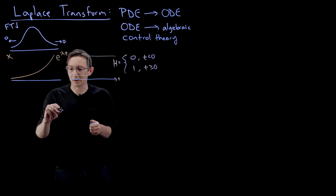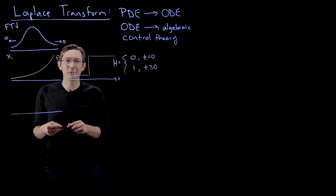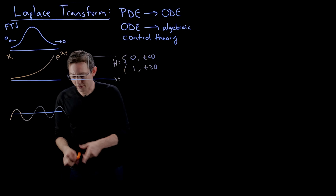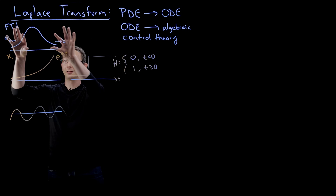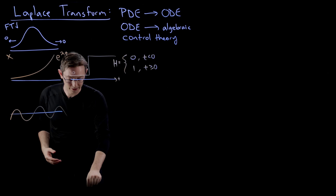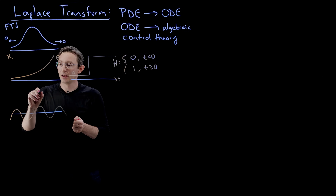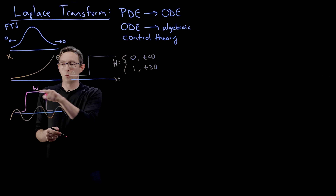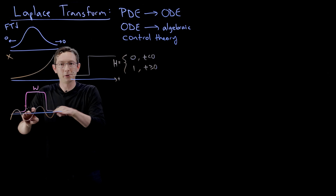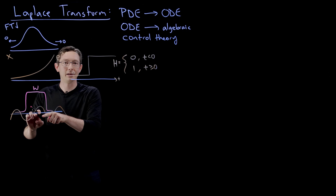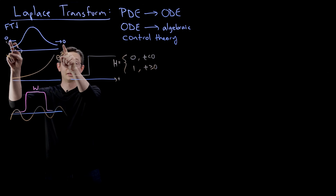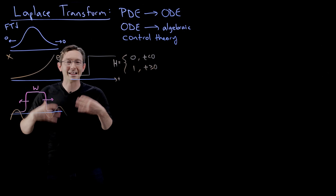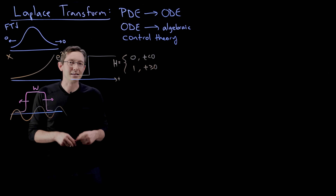There are other examples where technically you can Fourier transform, but it's a bit of a pain — like a trigonometric function, which doesn't decay to zero at plus and minus infinity. The most common trick is to multiply by a window function w, where w is one on some window and zero everywhere else. Then you multiply w by your sine or cosine function so it has the nice decay property, and you take the limit as this window becomes infinitely large. But again, it's kind of a pain.